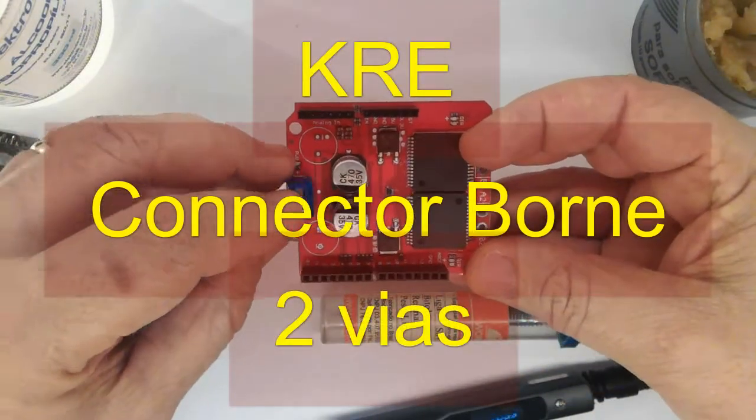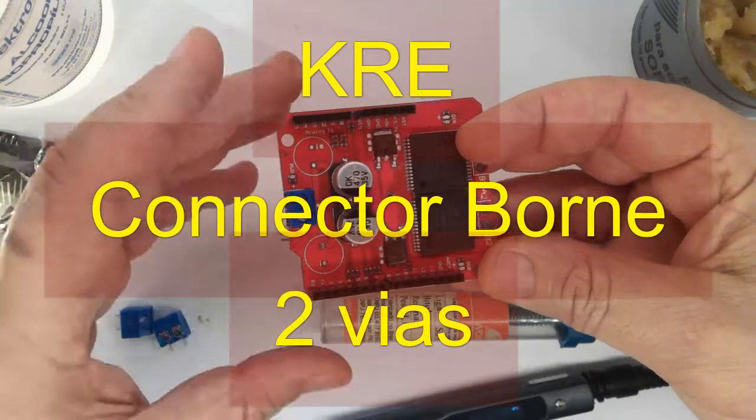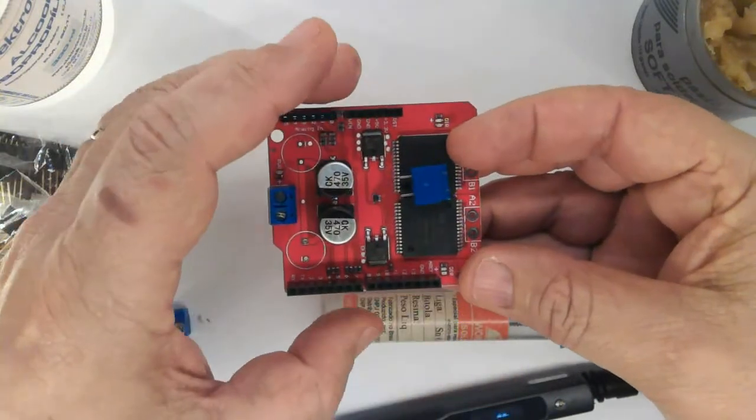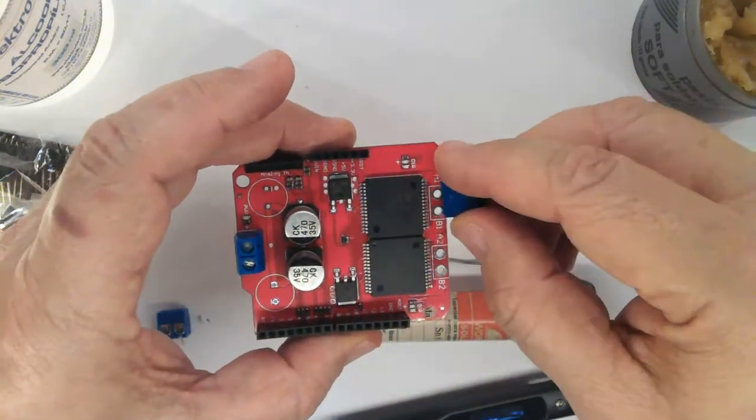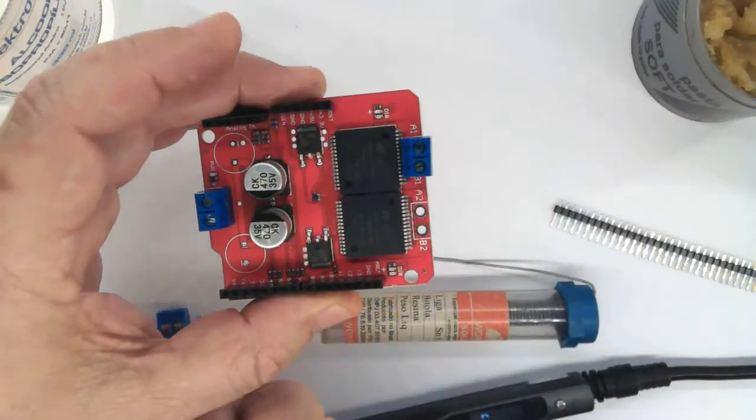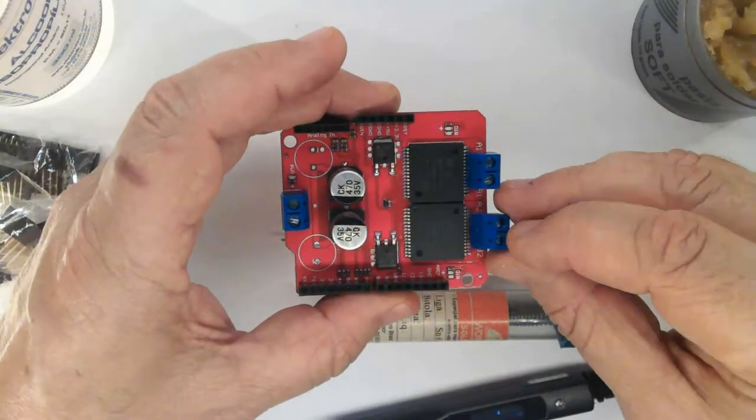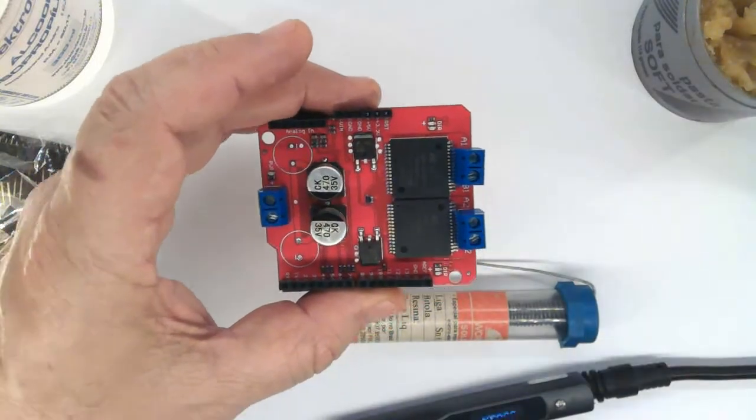This is connector borne KRE2 vias. We're gonna use three of them. Like this.